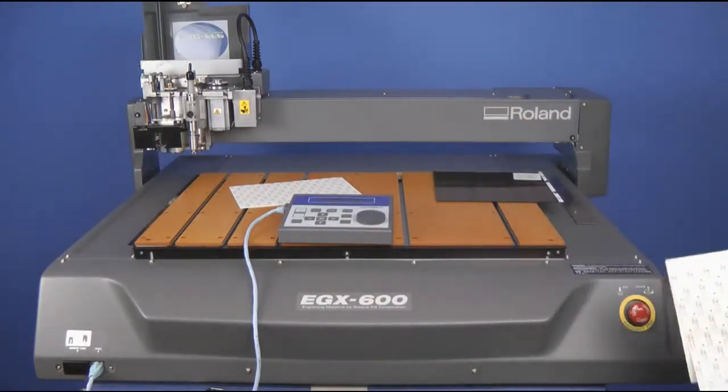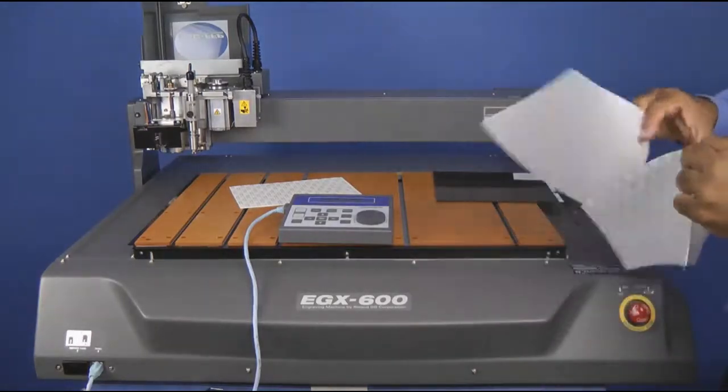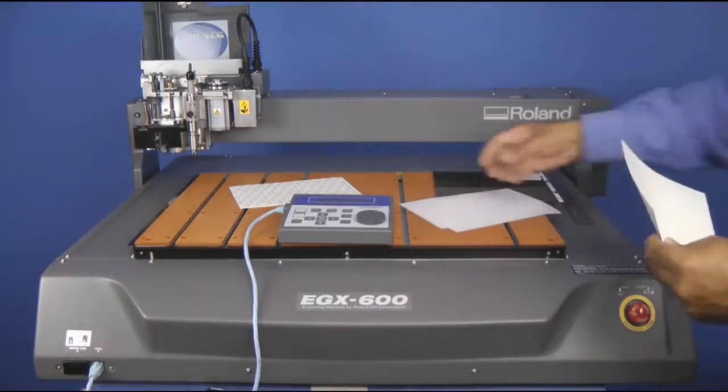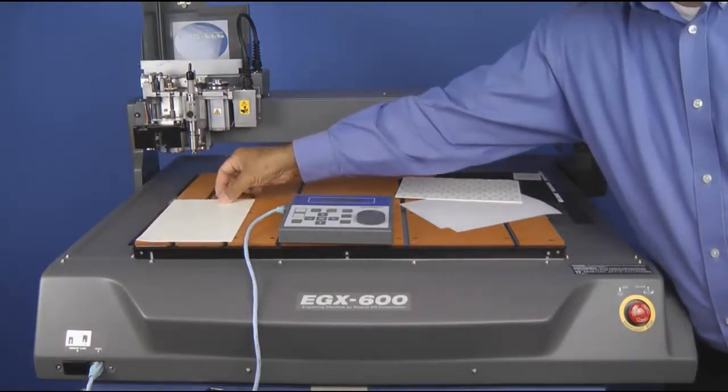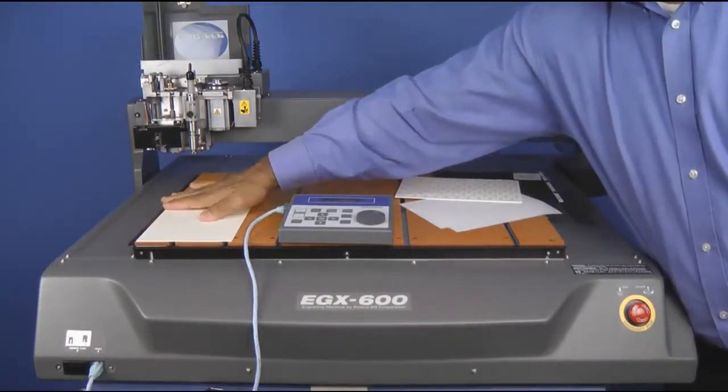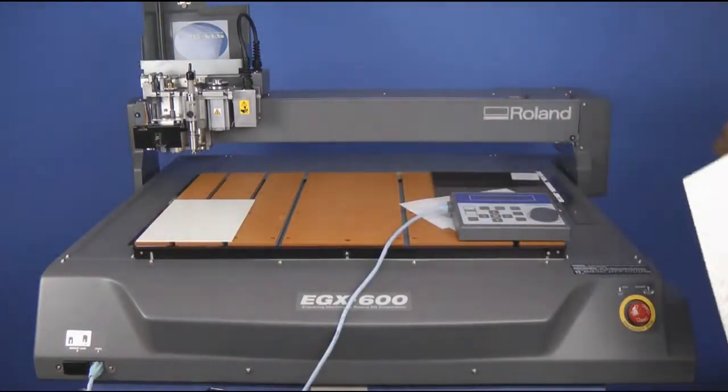We're going to go ahead and peel the backers off the AS10 sheets. We're going to go ahead and set these down onto the table. Depending on the size of your job, you may require additional AS10s.